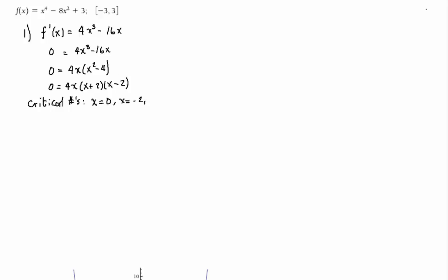Now you'll ask, why did you not find where the derivative of the function is not defined? Well, this is a polynomial so it's always defined, so I don't have to look for that. In general, you do want to find out when the derivative is 0 and when the derivative is not defined.